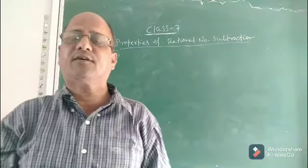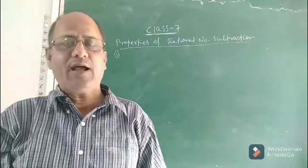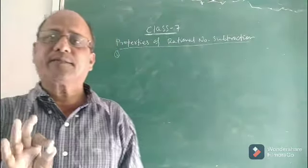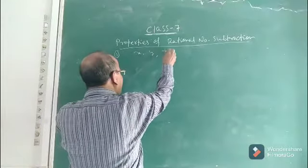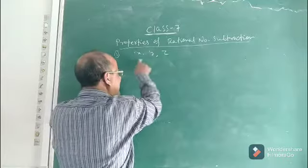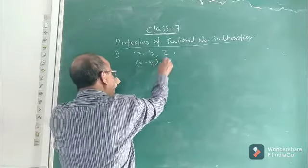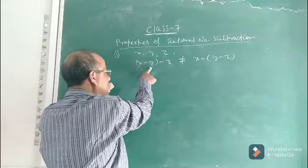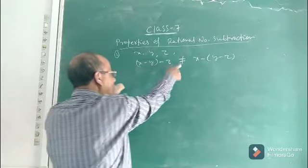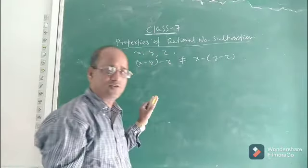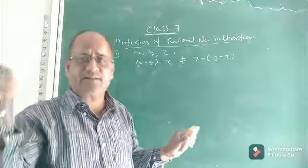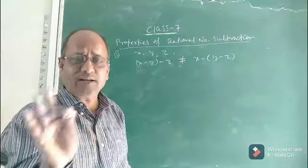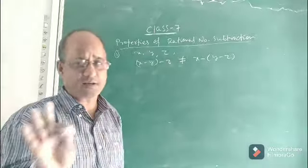Good morning children. In the previous lesson I discussed the associative law of subtraction, and I had proved that the associative property does not hold good for subtraction of rational numbers. That means, if x, y and z are any three rational numbers, then x minus y minus z is not equal to x minus open bracket y minus z close bracket. So it was proved that associative property does not hold good for subtraction of rational numbers.